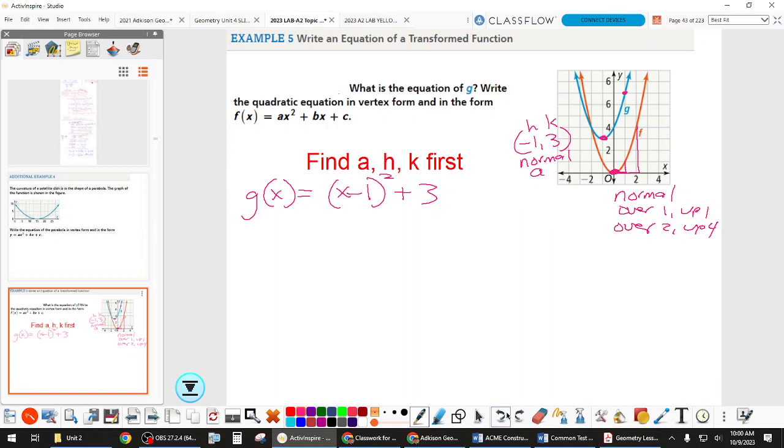So from vertex form, which we'll start with, I'm going to write it as G, so G of X in vertex form should be X minus negative 1, or X plus 1, squared plus 3. Remember A was just normal, it was 1, so we don't need to write anything in there.